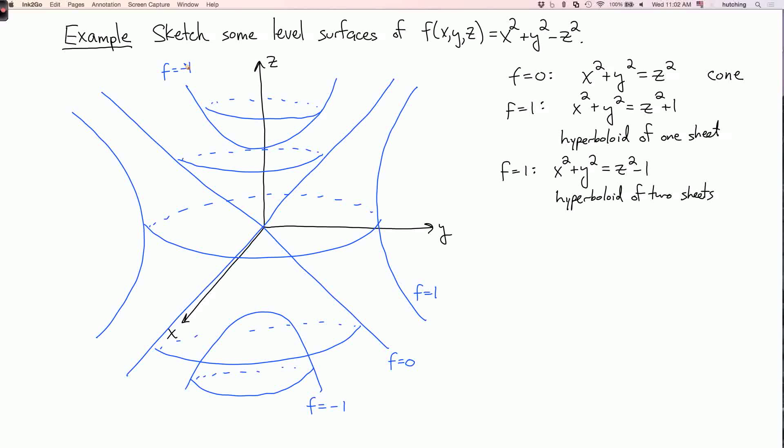You can also think about all these surfaces as a movie. You could imagine taking some value of f, like starting at f equals one, where I have this outer hyperboloid of one sheet, then we could decrease the value of f, and as we decrease the value of f, the surface we get is going to move. And when f gets to zero, this hyperboloid of one sheet pinches to form a cone.